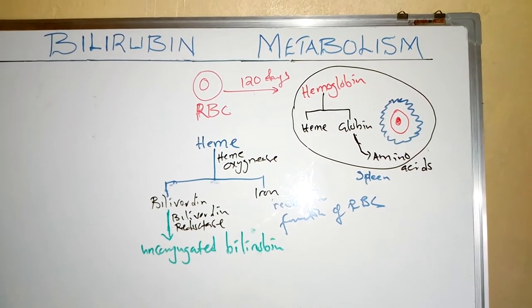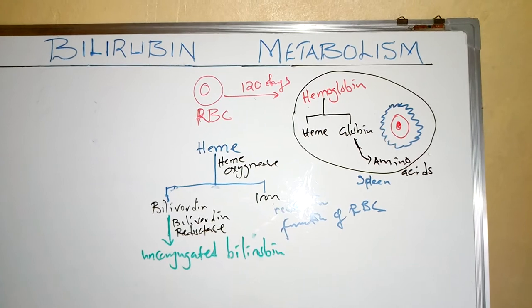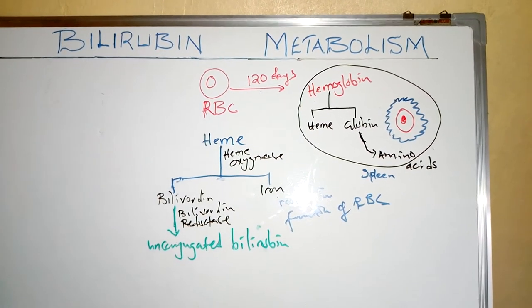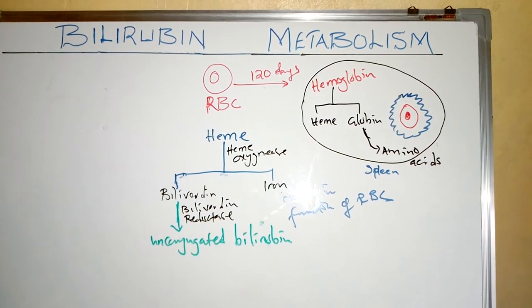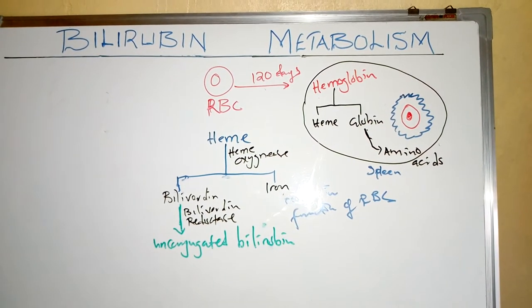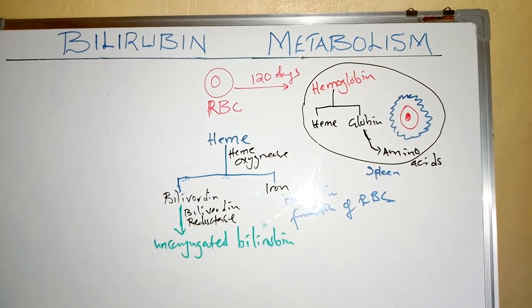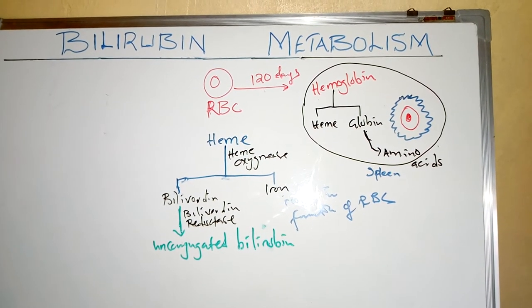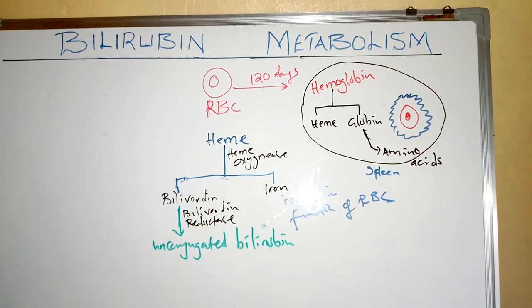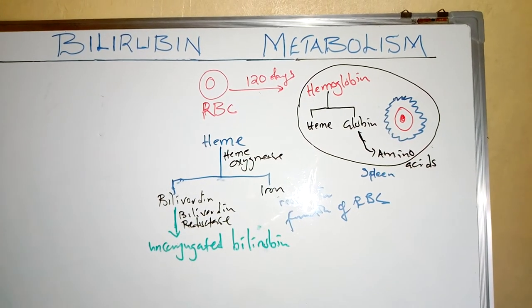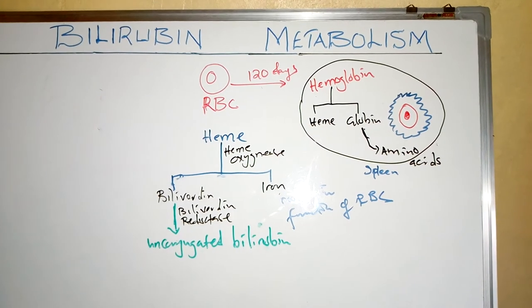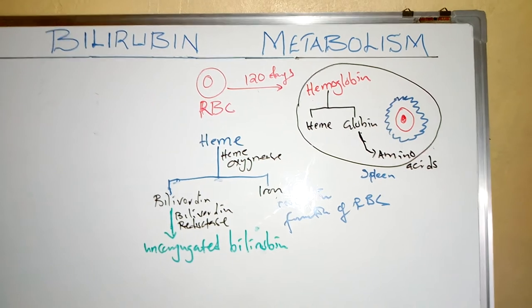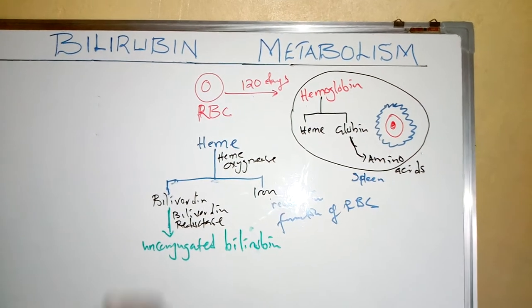Once we have the unconjugated bilirubin, this unconjugated bilirubin is actually fat soluble and it is very toxic and dangerous. In its fat-soluble form it cannot be excreted — it has to be converted into a water-soluble form. If it is not changed, unconjugated bilirubin can go to the brain and cause a condition called kernicterus.